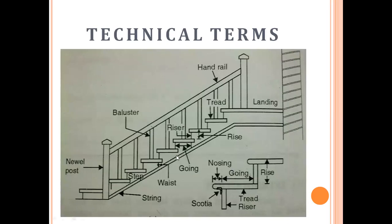All these terms are shown in the diagram. Here we have the newel post, the balusters, the string at the bottom portion, the going, the riser, the tread, the handrail, and the landing. From this diagram we have a clear idea of the different terms used in a stair.